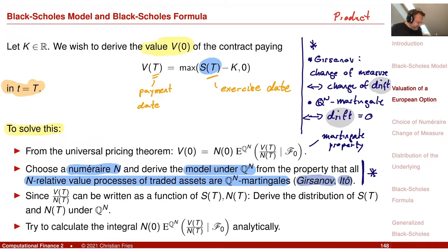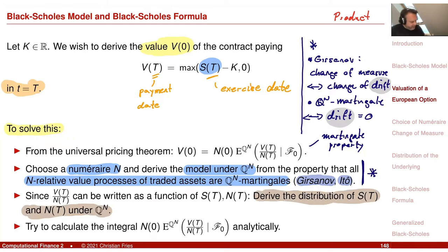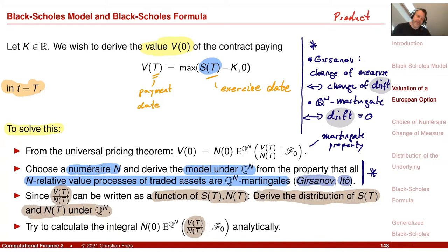Once we have solved this second step, I know the stochastic differential equation under Q_N. From that I can derive the probability distribution of S under Q_N. This means I know the distribution of the quantity inside the expectation, because that quantity is a function of S, and now I know the probability distribution. I take the expectation of something whose distribution I know, and maybe I can do this analytically to get the value.